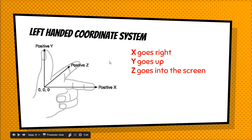Before we get started, we have to understand 3D coordinate space, because everything we're going to build requires understanding how objects are placed and moved in 3D space. Unity uses a left-handed coordinate system. Into the screen is the Z-axis, to the right and left is the X-axis, and up and down is the Y-axis.